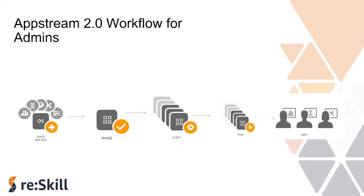What is the traditional workflow for AppStream 2.0? From an admin point of view, the first thing is to create a machine, install the required software, customize it — all done in your image builder. Once done, you convert that machine to an AWS AppStream image. Then you create fleets or streaming instances from that custom image. Next, you create stacks by associating the fleet, user configuration, and storage configuration, and then publish or assign these stacks to multiple users.